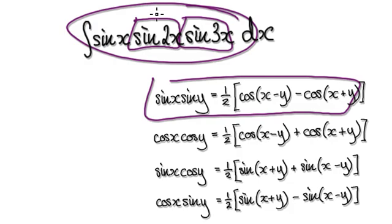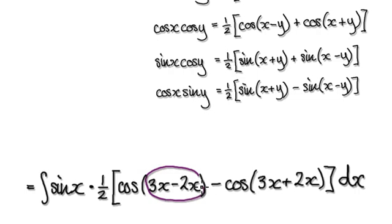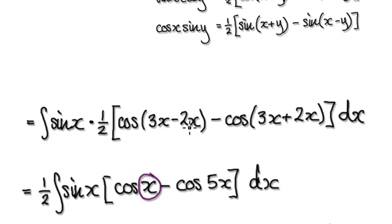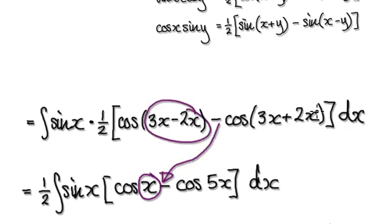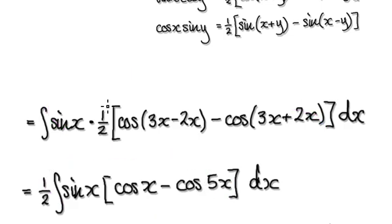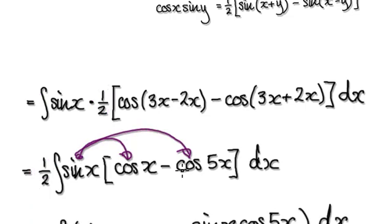Breaking up those two blocks gives us this result. So this term here would be cos(x) — because 3x minus 2x is x — and then minus cos(5x), because 3x plus 2x is 5x. Then factor out the constant, multiply it out, and you get this simplified expression.